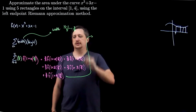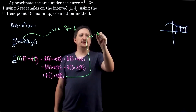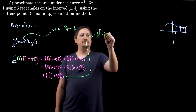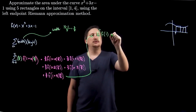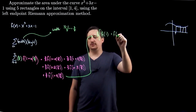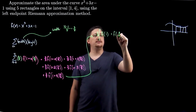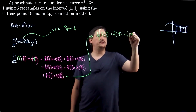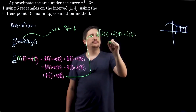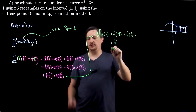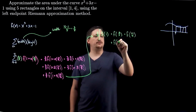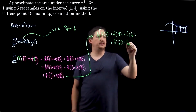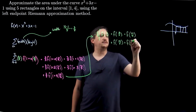My next step is to simplify. So factoring out that 3 fifths: f of 1 (since 1 plus 0 times 3/5 is 1) plus f of 8 fifths (1 plus 3/5) plus f of 11 fifths (1 plus 6/5) plus f of 14 fifths (1 plus 9/5) plus f of 17 fifths (1 plus 12/5).